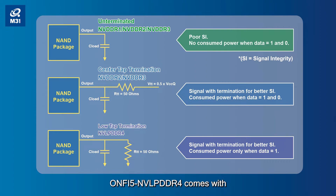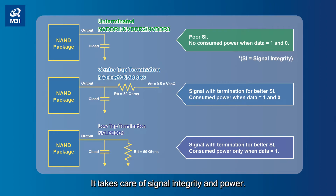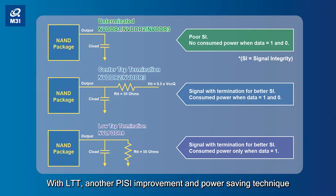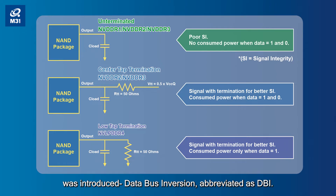ONV 5.0 NV-LPDDR4 comes with a new signal interface and topology. It takes care of signal integrity and power with LTT. Another PISI improvement and power saving technique was introduced: Data Bus Inversion, abbreviated as DBI.